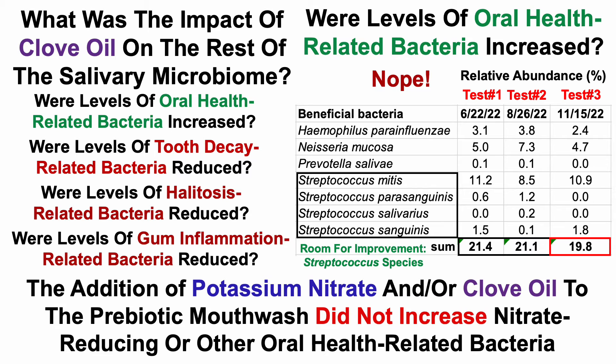From these two bits of data — the nitrate reducers and the beneficial bacteria — we can see that the addition of potassium nitrate for the two tests, or clove oil for test number three, to the prebiotic mouthwash did not increase, in my case, nitrate-reducing or other oral health-related bacteria.